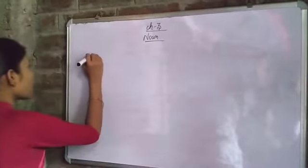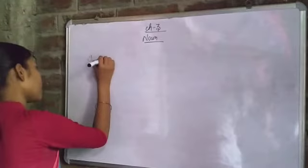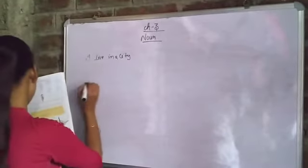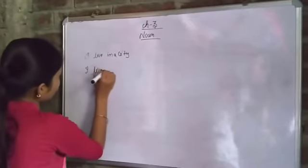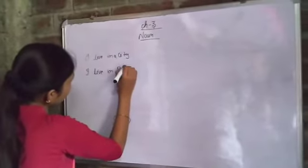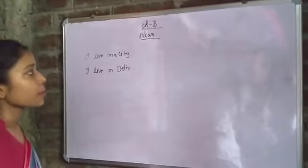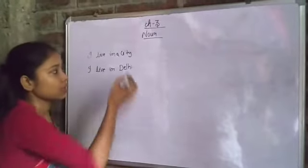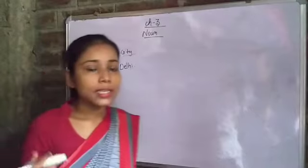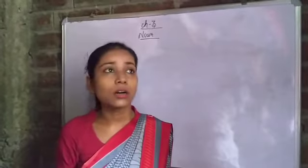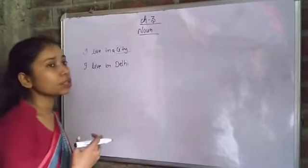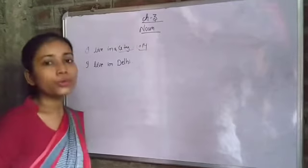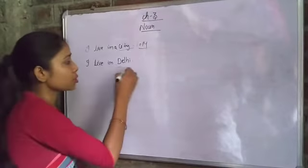Let me solve some examples. 'I live in a city.' 'I live in Delhi.' By using these examples we have to understand the difference between common and proper nouns. In 'I live in a city,' the word 'city' doesn't tell us which specific city — it's a general name, so that goes to common noun.